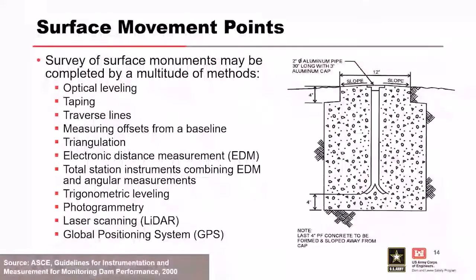Surface movement points are quite familiar — most of us have seen them on dam sites. A surface monument is a fairly shallow installation surveyed by a number of devices. An important point: make sure you use a consistent method. If monuments are traditionally read by optical leveling, continue that method until you've rebaselined and correlated to an updated method, because very small movements could show false results if methods are changed.